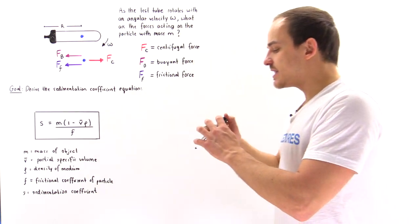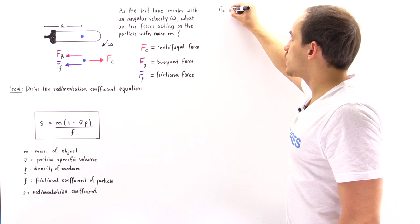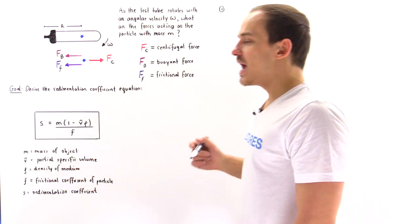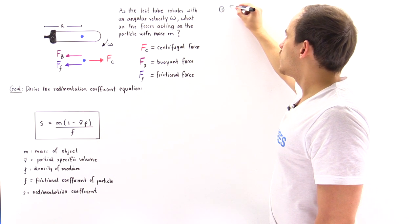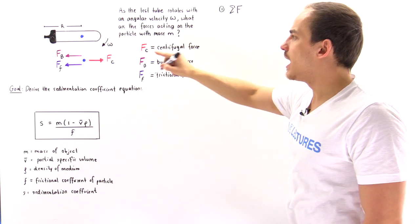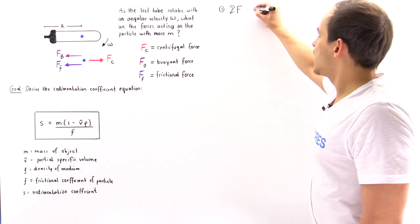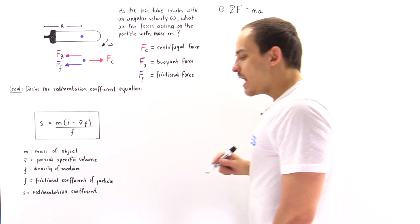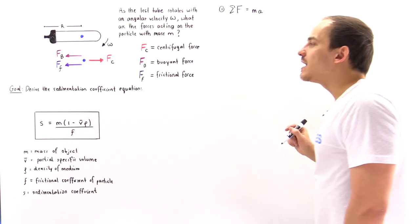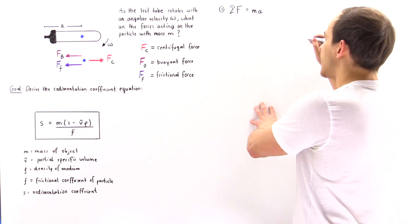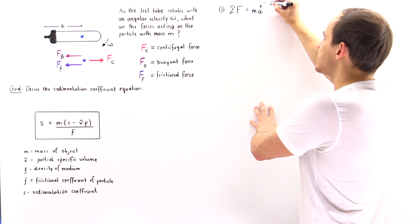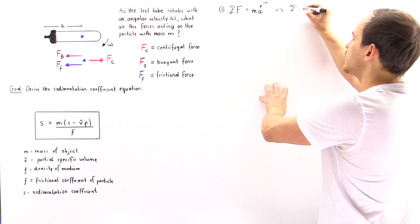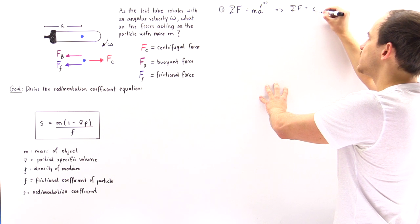The first step in our derivation is to choose the equation of motion. We use Newton's second law: the sum of all forces along the x-axis equals mass times acceleration. If we assume the velocity of the particle is constant, then acceleration equals zero, which implies the sum of all forces equals zero.